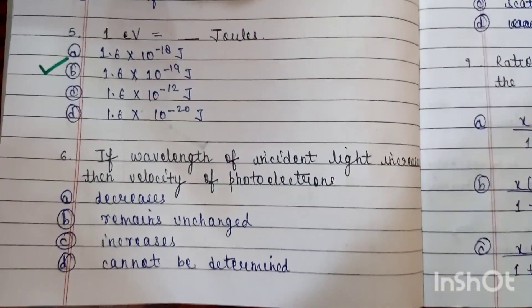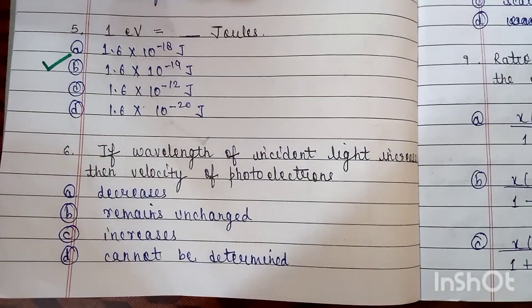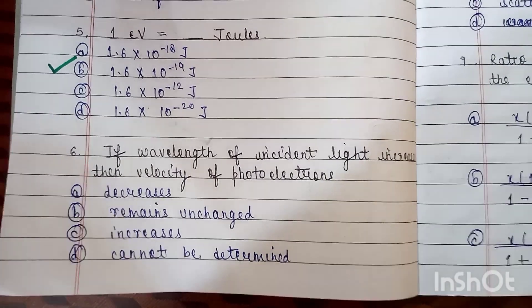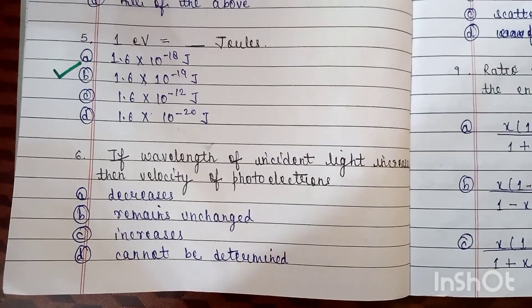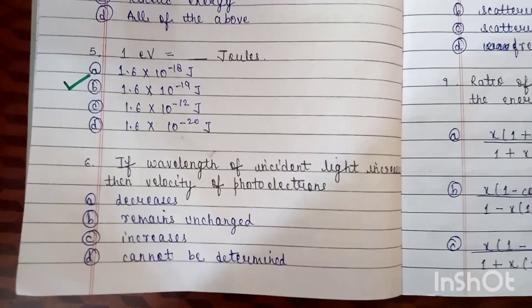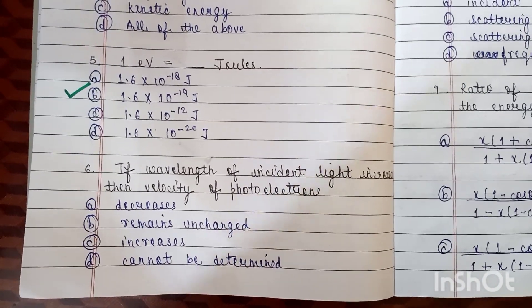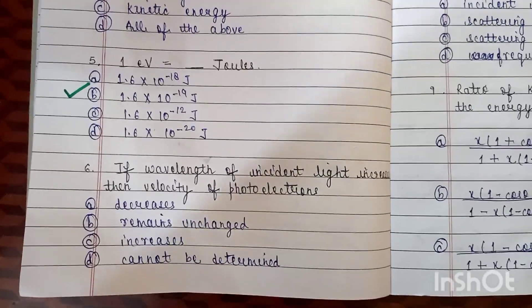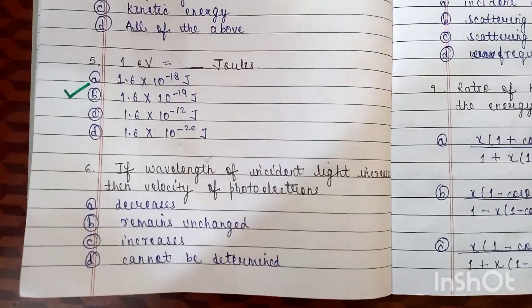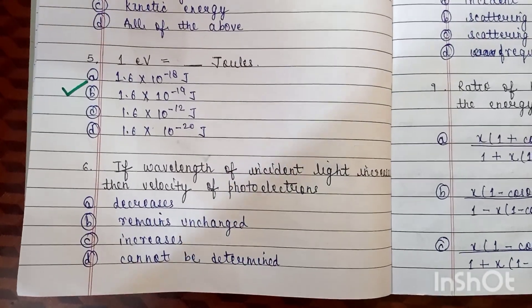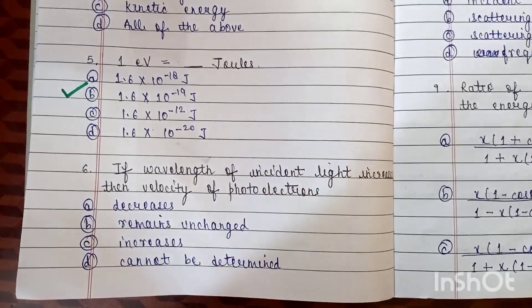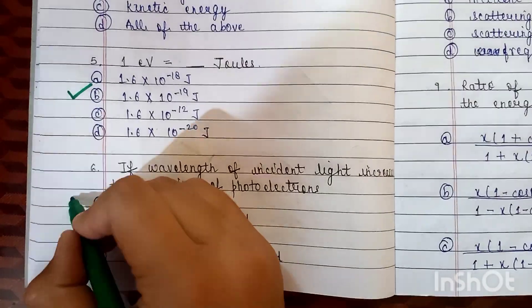Sixth question: if the wavelength of incident light increases, then the velocity of photoelectrons — decreases, remains unchanged, increases, or cannot be determined? The correct answer is A: decreases.